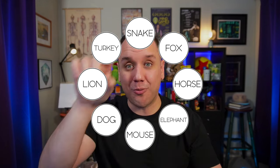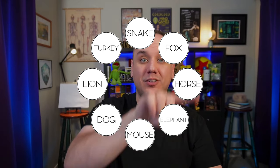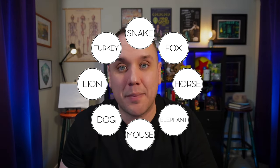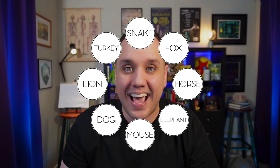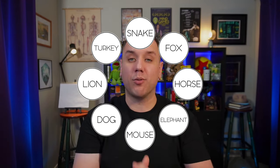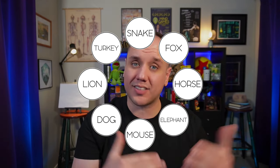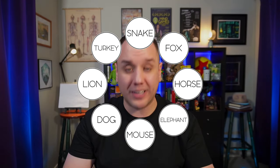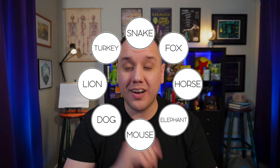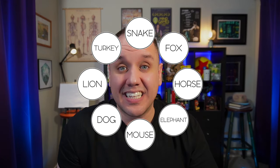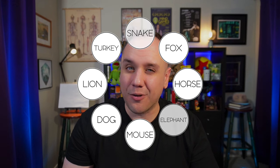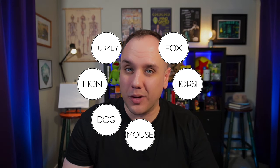So go ahead, count around the circle of animals in this direction until you get to your number and stop on that animal. If you need more time, go ahead and pause the video. But hopefully at this point, you have stopped on one of the animals in this circle. But I think that you are not on either of these ones.